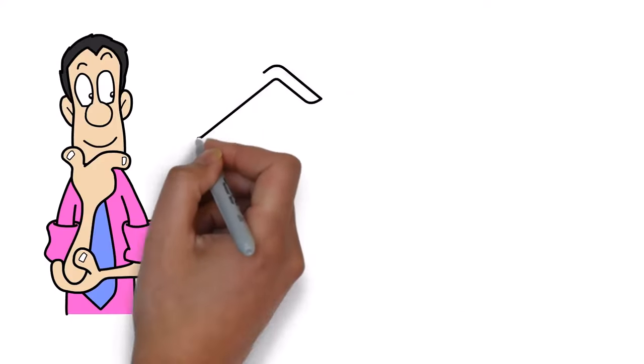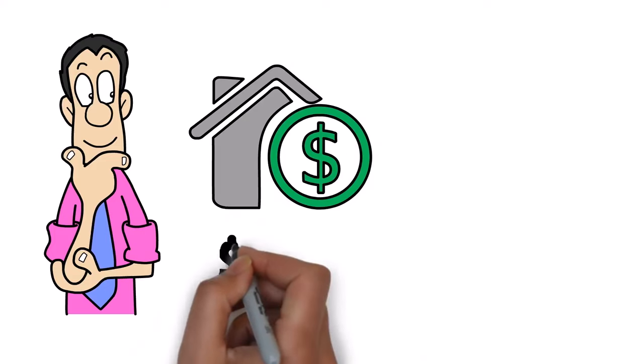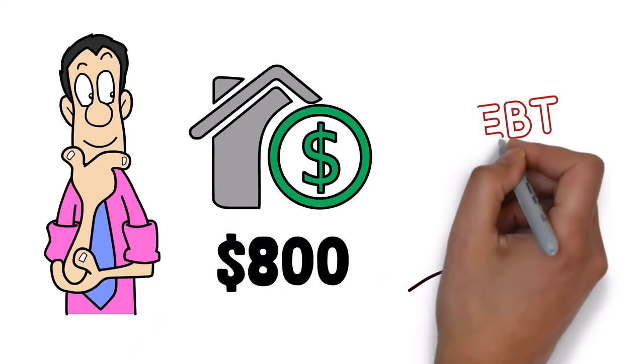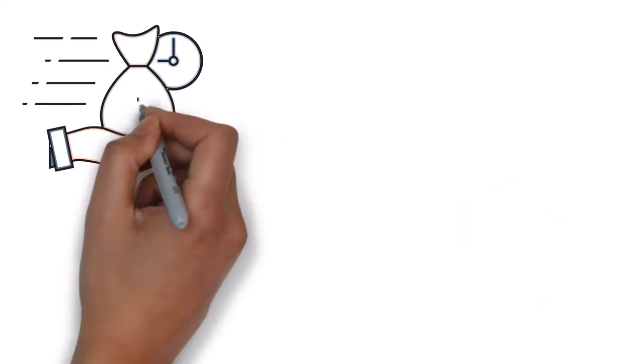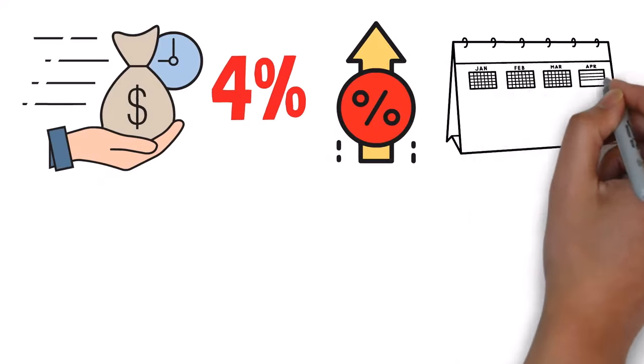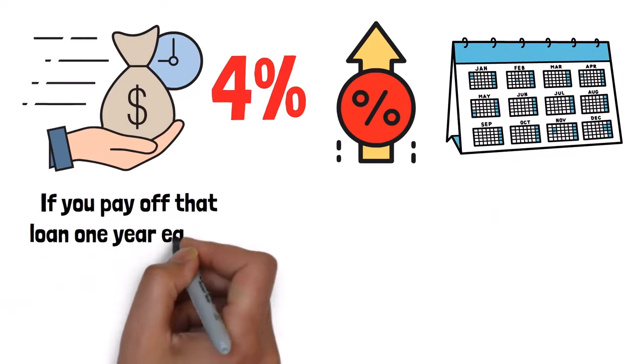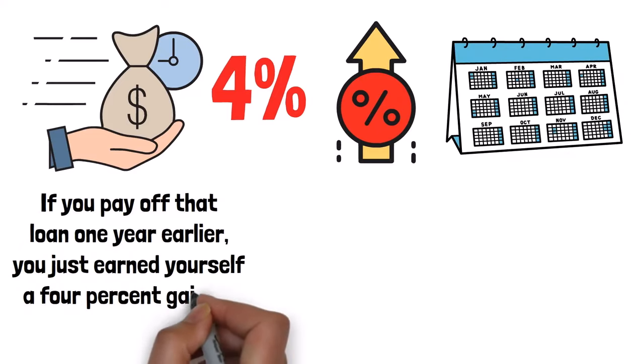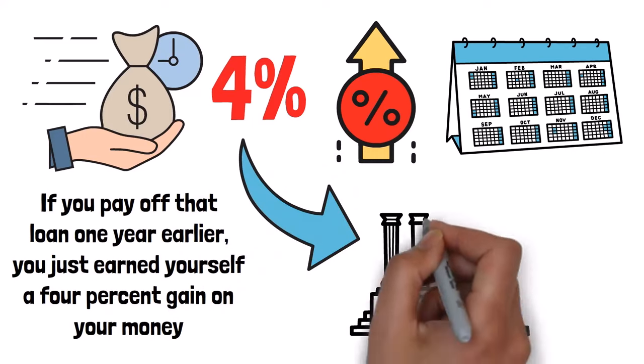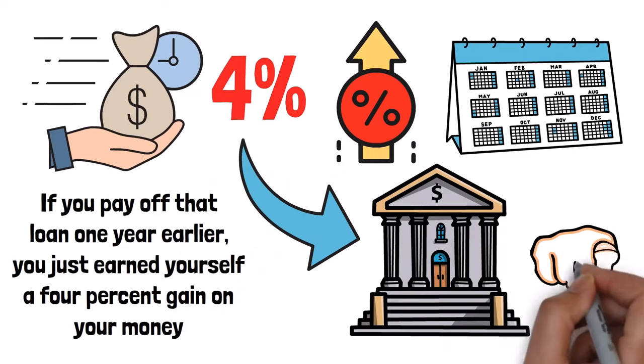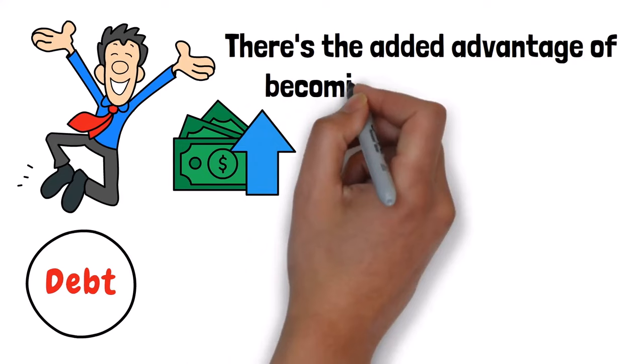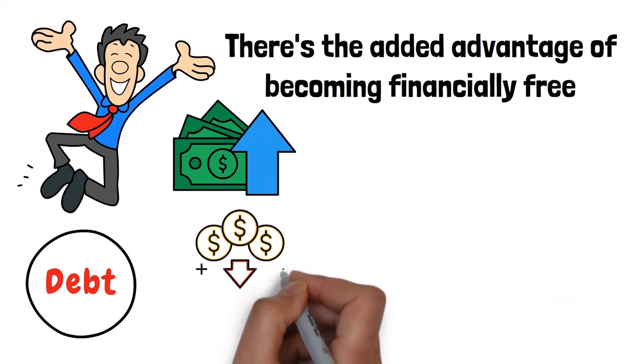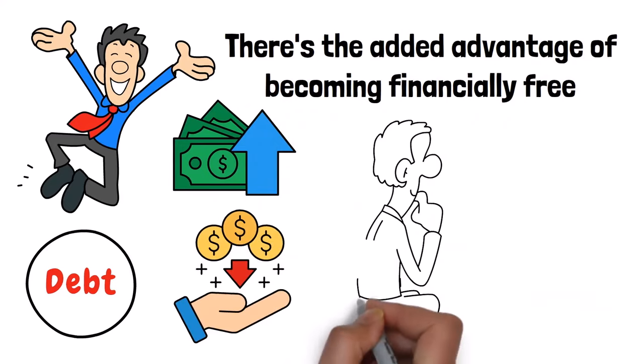So, what if you still don't fancy any real estate investments? What can you do with $800? Well, clear your debt. Let's say you have a loan that accumulates 4% interest yearly. If you pay off that loan one year earlier, you just earned yourself a 4% gain on your money, because that 4% you would have given to your bank is now yours. This is one smart way to clear your debt and still make small returns. Plus, there's the added advantage of becoming financially free, so you can focus on other passive income investments, like the ones I've mentioned in this video.